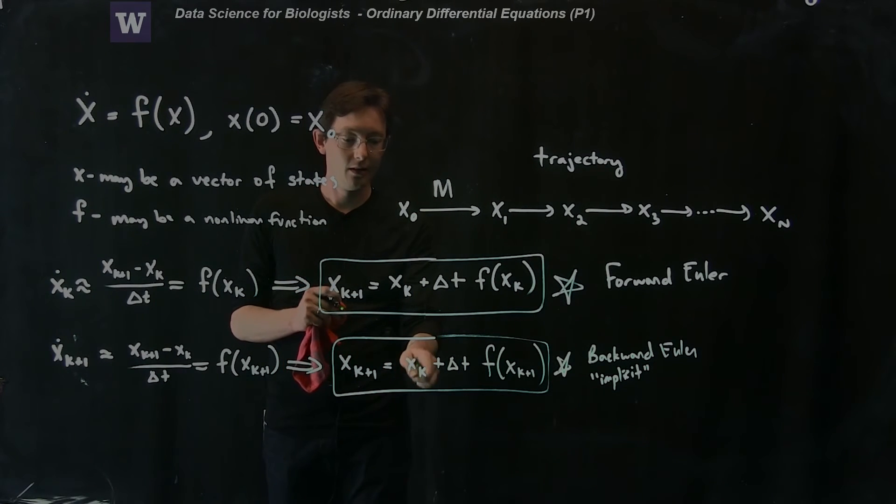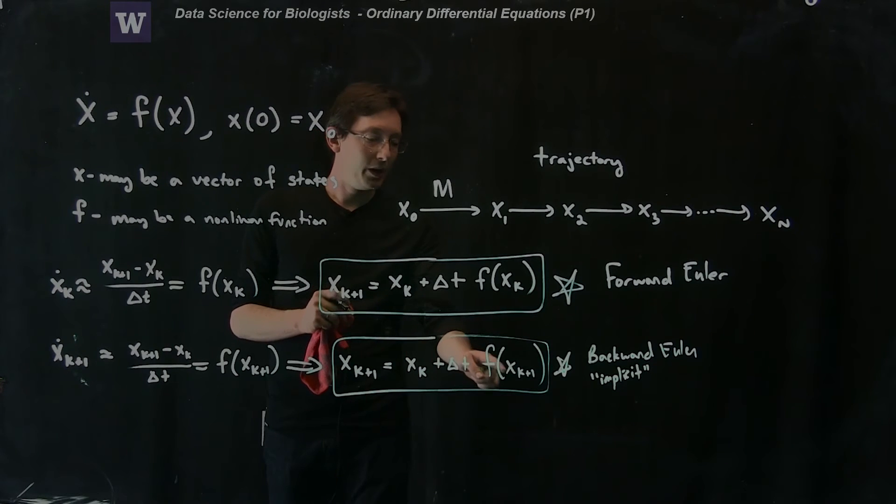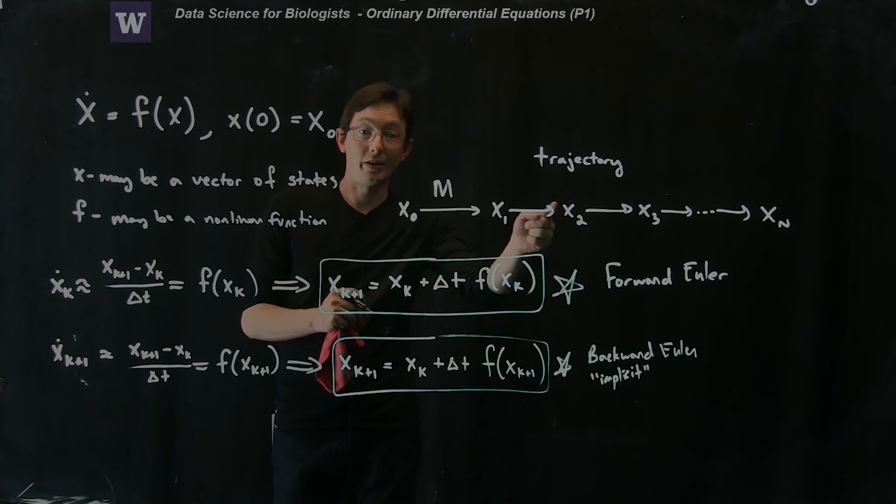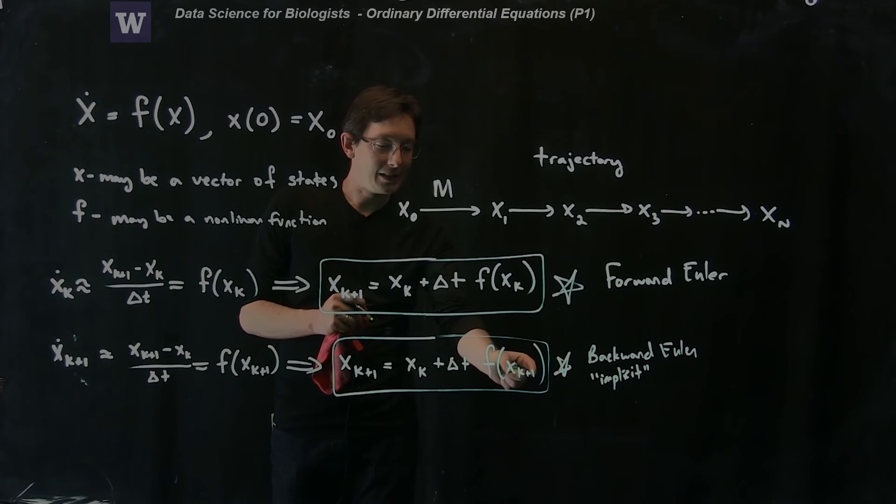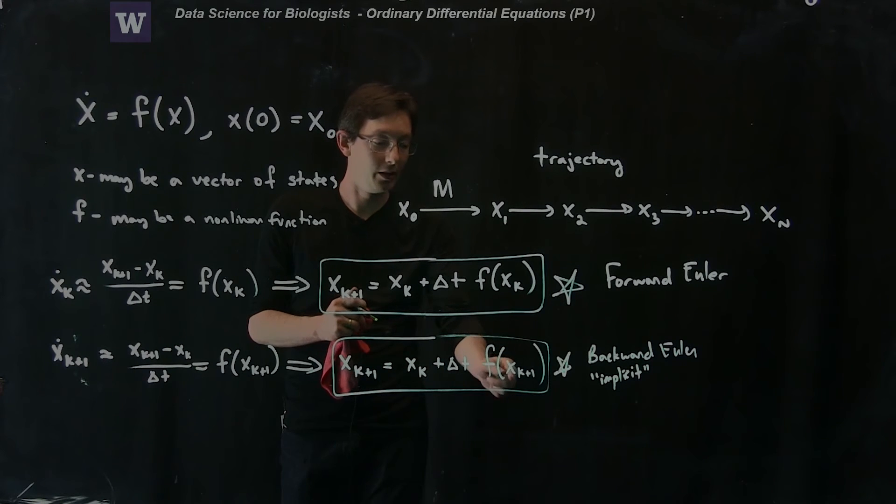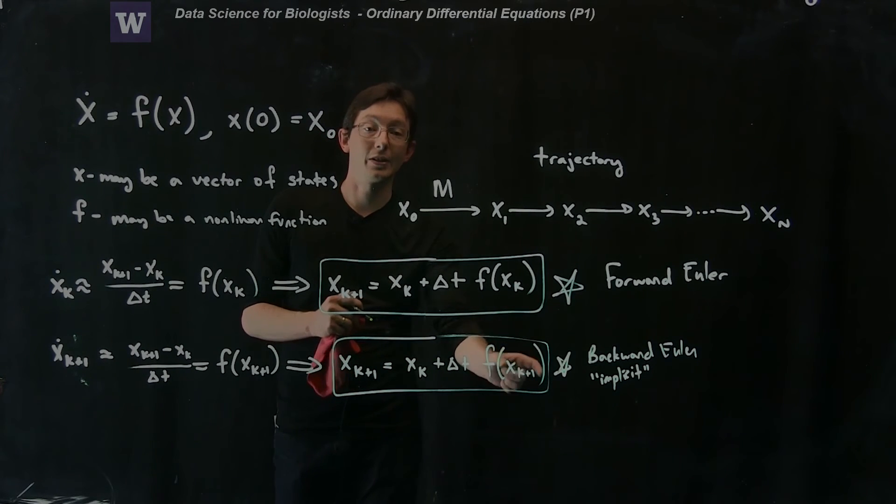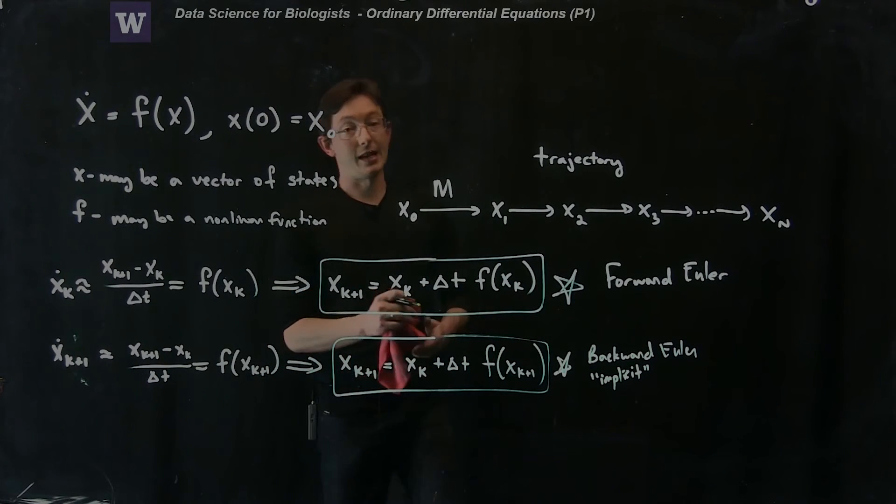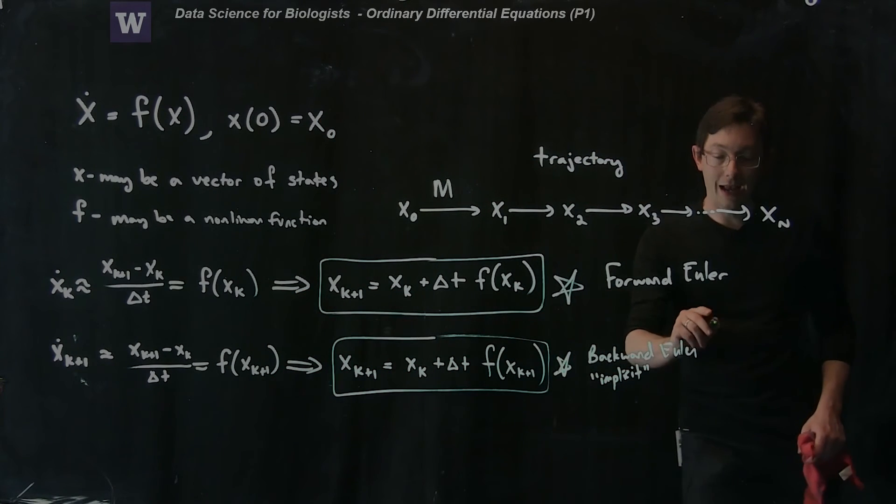But here it's a little more difficult. If I have x naught, I have this guy. But if I want to solve for x_k plus 1, which is the next step in my trajectory, it's an implicit function of x_k plus 1. And so it might be really difficult to actually solve for the x_k plus 1 that makes this satisfied.